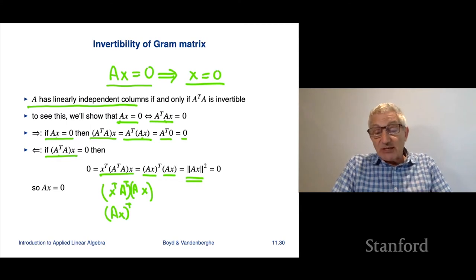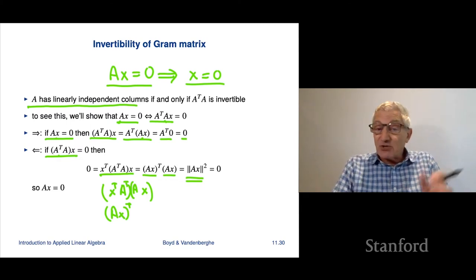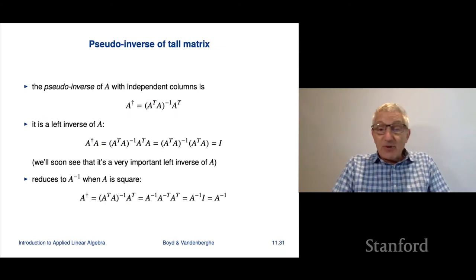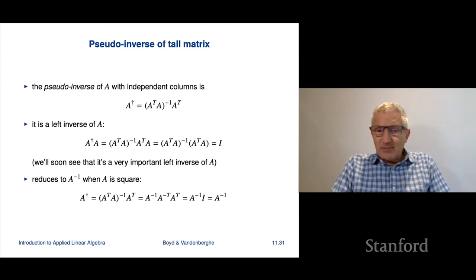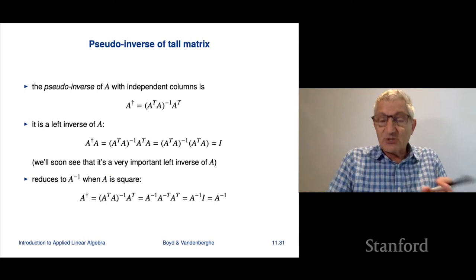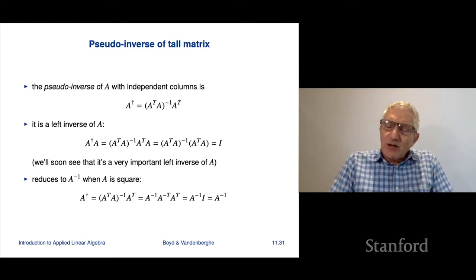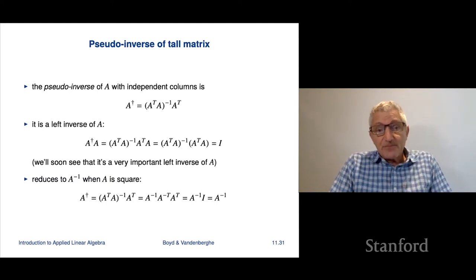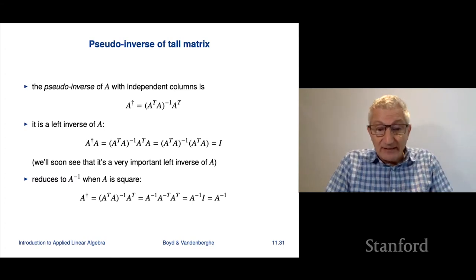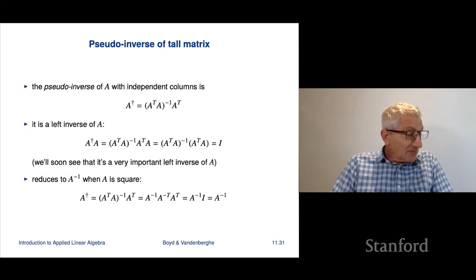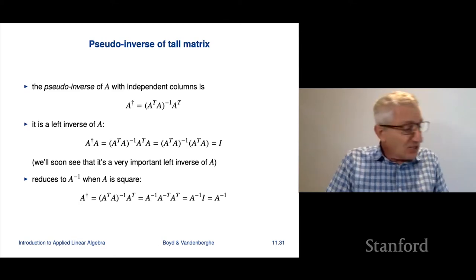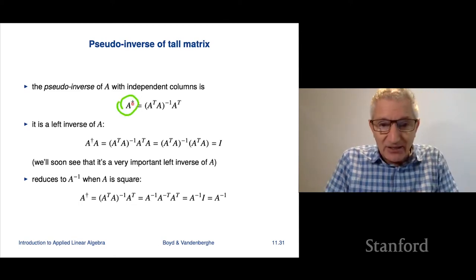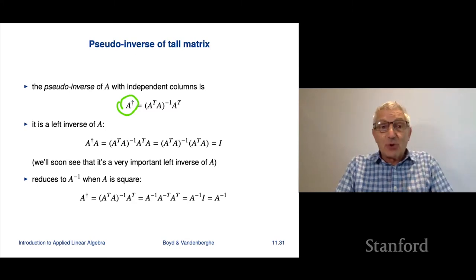That's a connection between a matrix and its associated Gram matrix. Now we can define the pseudo-inverse of a tall matrix. This is pretty standard mathematical notation — it's also called the Moore-Penrose inverse, named after British mathematicians. Its notation is a superscript dagger, so in informal speech you might say 'A dagger.'